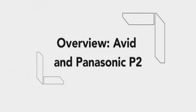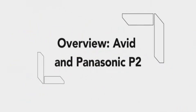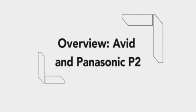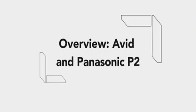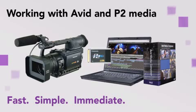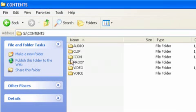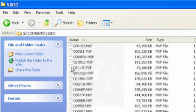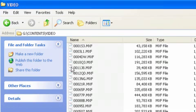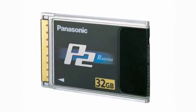Introduction to using the Panasonic HVX200 camera with Avid Media Composer. With Avid, editing footage captured with the HVX200 camera is fast and easy. Avid systems use the same native file format as Panasonic P2 memory cards, so there's no transcode, digitize, or file conversion process of any kind.